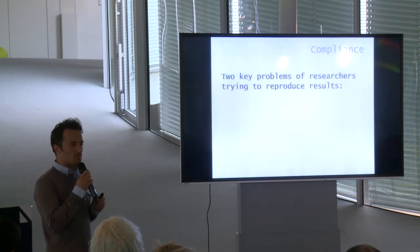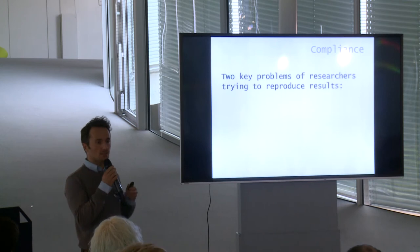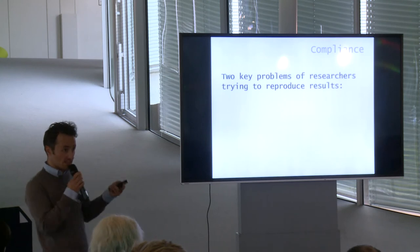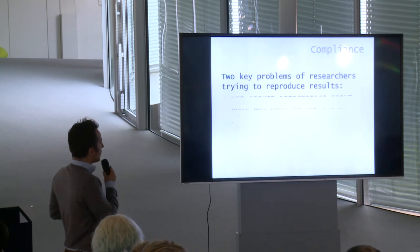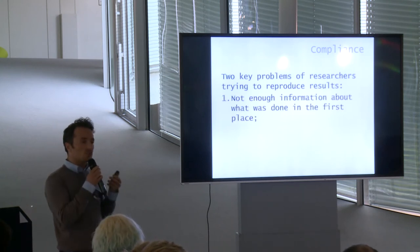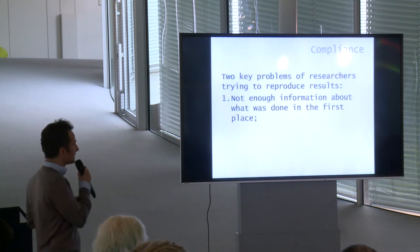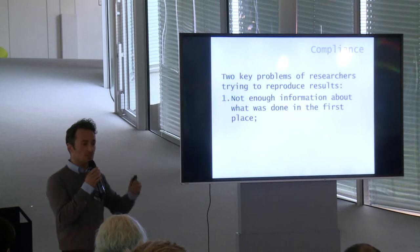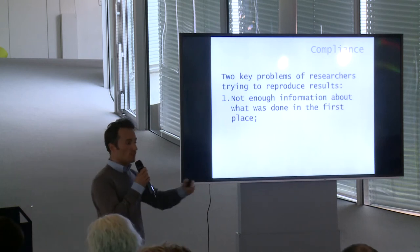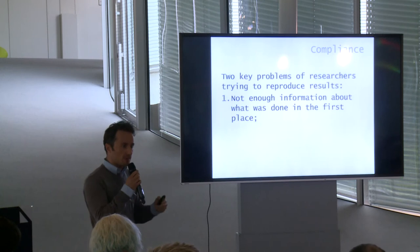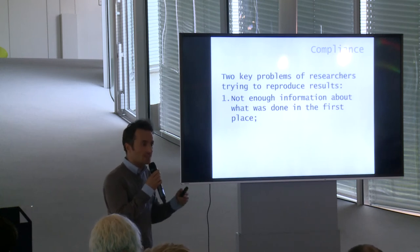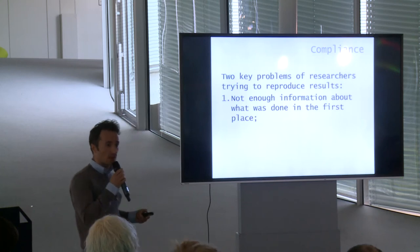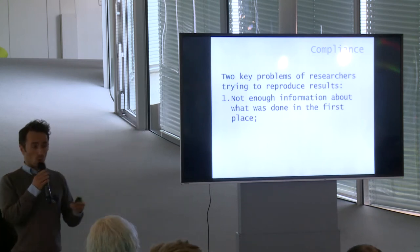There are two key problems that researchers who try to replicate their own work or the work of others face. First, they usually don't get enough information from the journal articles about what was done in the first place. It's very difficult to go as far as getting results because the experiment itself is hard to replicate — there is not enough information about how the sample was collected or what the variables were.